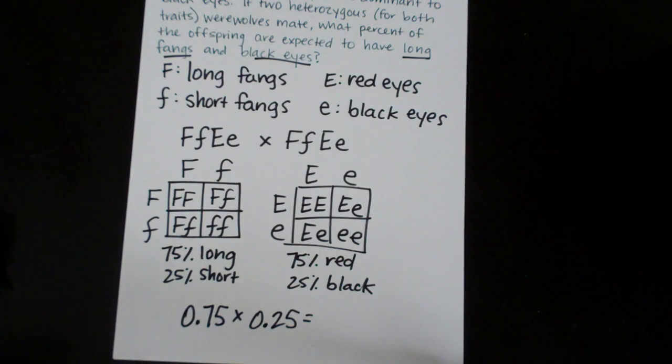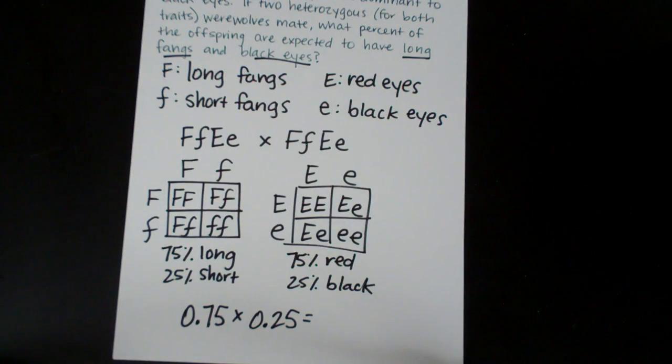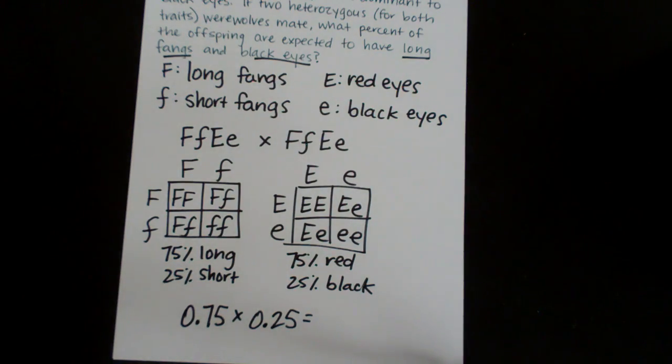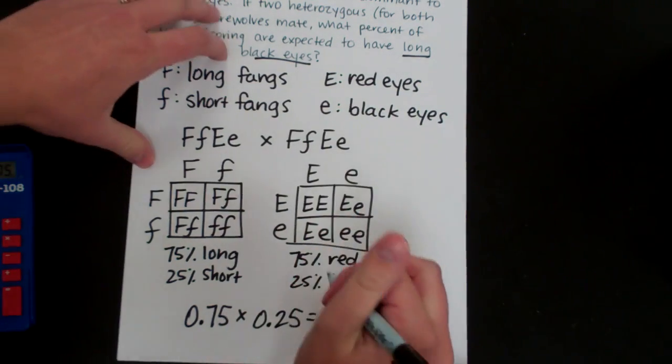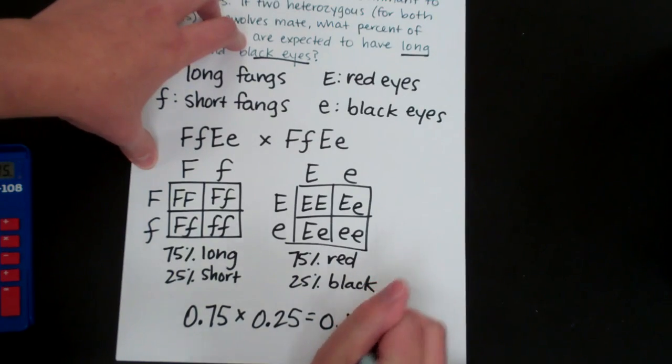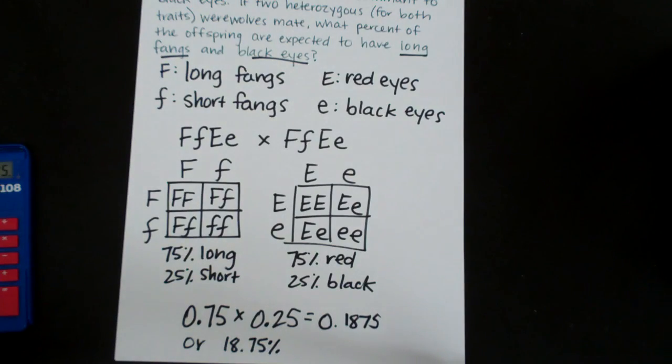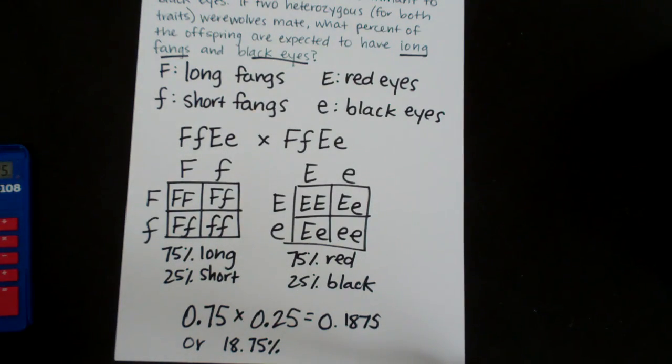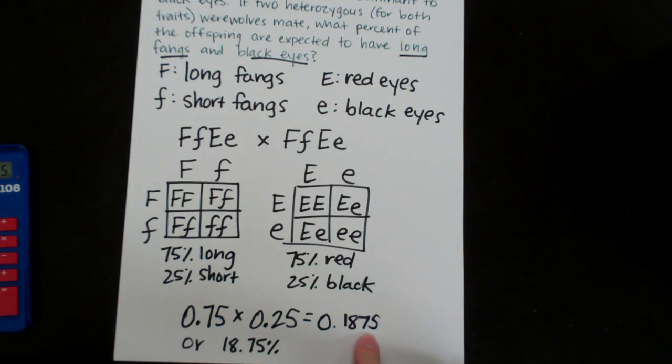So if you multiply 0.75 times 0.25 that will give you your appropriate probability. So let's calculate that. So 0.75 times 0.25 gives us 0.1875 or 18.75%. Now remember if you want to actually look at the total number that you expect you would multiply 0.1875 or 18.75% times the total.